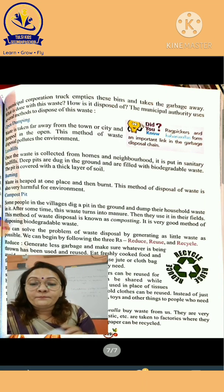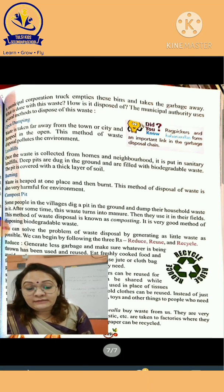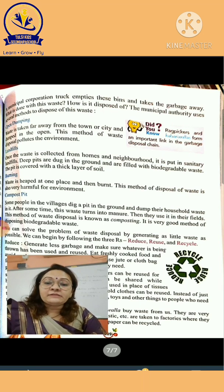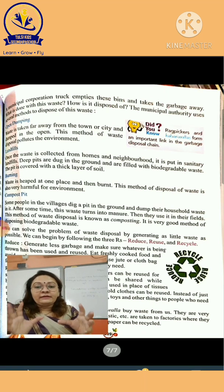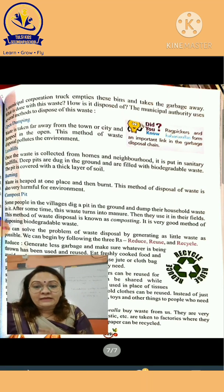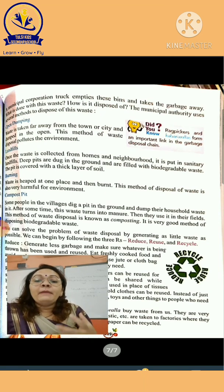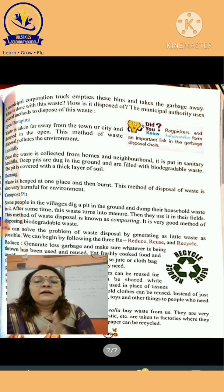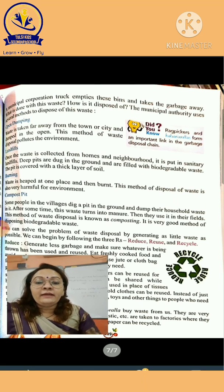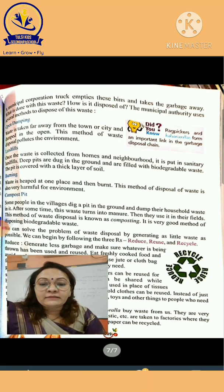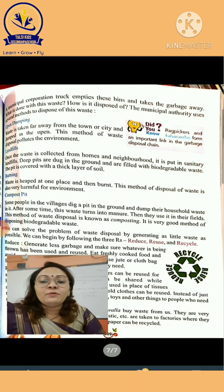Is tarike se baut saare tarike hain jiski wajah se hum log waste ko dispose kar sakte hain — like burning, matlab usko jala ke kachra se chhutkara paana. Compost pit — compost pit ka matlab, ek khadda khoda jaata hai, us khadde ke andar sara biodegradable waste daal diya jaata hai, aur baad mein us biodegradable waste mein se dheere dheere kya produce hota hai — manure, matlab khaad. Aur woh jo khaad hai, woh wapas hum log kheton mein kaam mein le sakte hain. So it is a very good method for disposing biodegradable waste.